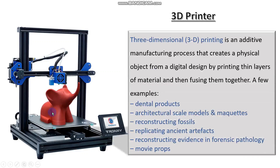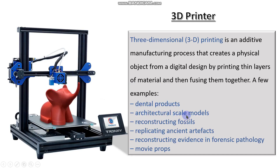Moving on to the next — the 3D printer, very interesting. A 3D printer is an additive manufacturing process that creates a physical object from a digital design by printing thin layers of material and then fusing them together. We create a design in a 3D application, and the printer creates that design layer by layer, then fuses them all together to make a whole 3D object. Examples of 3D printer uses include dental products, architectural scale models, reconstructing fossils, replicating ancient artifacts, reconstructing evidence in pathology, and movie props.